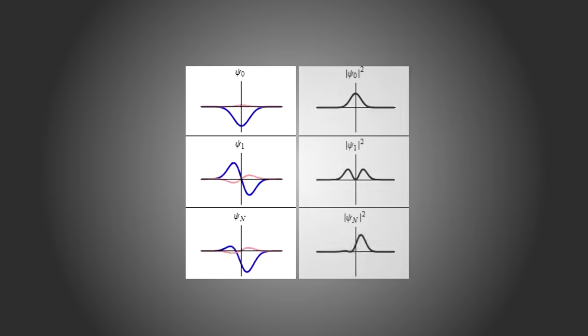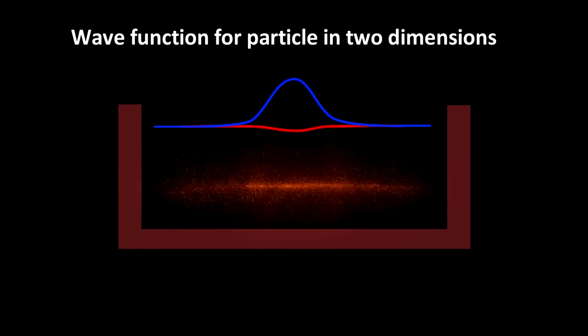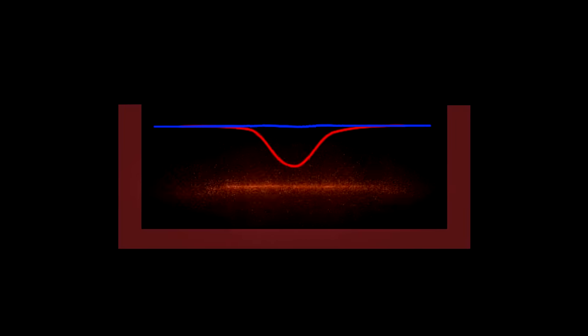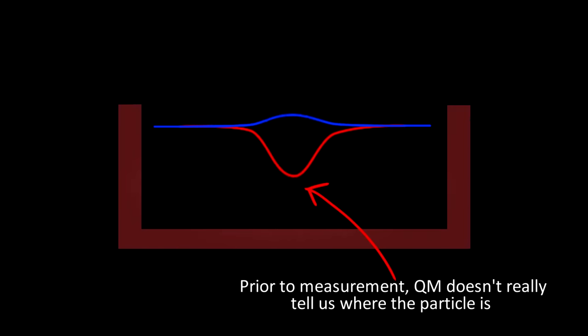By itself, the wave function doesn't have any intuitive meaning. But the square of the wave function gives us the probability of finding that quantum object in any particular place. The picture seemingly makes no sense from a classical perspective because it then looks as though before a measurement the particle must be in all those places and states at once. Prior to measurement, quantum mechanics doesn't actually tell us where the particle is or what it's like at all. It just tells us the chances of what we'll see if we measure it, if we look.